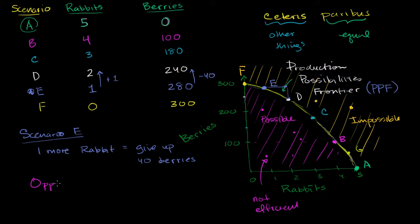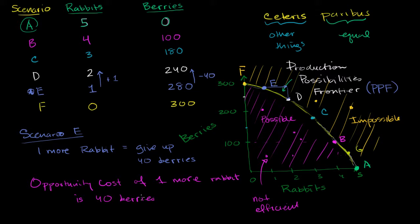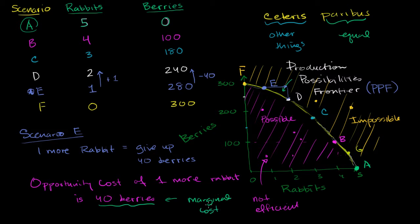The technical term for what I've just described is the opportunity cost of going after one more rabbit is giving up 40 berries. So the opportunity cost of one more rabbit — and this is particular to Scenario E. As we'll see, it's going to change depending on what scenario we are in, at least for this example. So the opportunity cost of one more rabbit is 40 berries, assuming we are in Scenario E. One more rabbit, I have to give up 40 berries. And another term — when we talk about the opportunity cost of producing one more unit — that's sometimes called the marginal cost. So this right over here you can also view as the marginal cost.